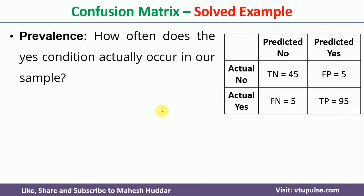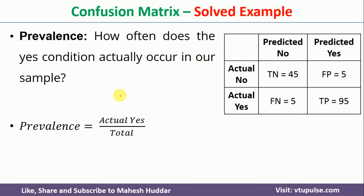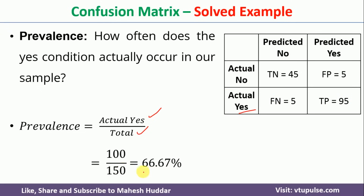The last metric is prevalence — how often does the yes condition actually occur in our sample. That is actual yes divided by total number of examples, which is 100 divided by 150, giving 66.67%.